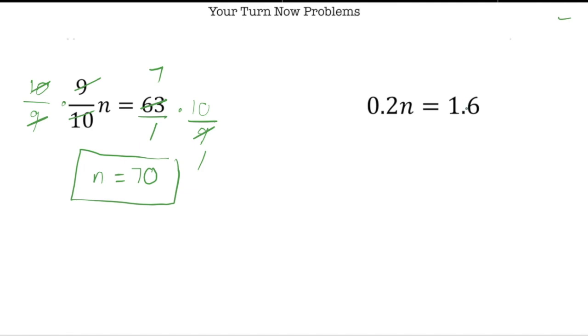The next one we have 2 tenths n equals 1 and 6 tenths. So I'm going to divide both by 2 tenths. Again, that makes the 2 tenths cancel out. And we have n equals. So now I need to know how many times those 2 tenths go into 1 and 6 tenths. So we've got to do the long division over here.